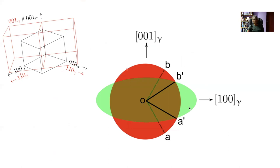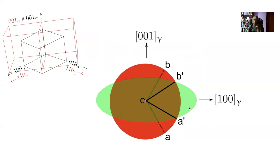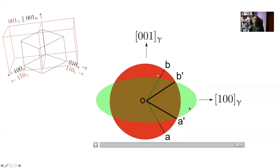If I represent my austenite as a sphere — a red colored sphere — then as a result of the Bain strain along the vertical axis, a compression, and along the horizontal axis a uniform expansion, that sphere will change into an ellipsoid of revolution about 001. Lines OB and OA become OA' and OB' as a consequence of the Bain strain, and they have exactly the same length, but they are not invariant lines because they have changed orientation. So the Bain strain doesn't produce any invariant line.